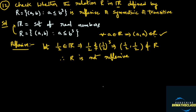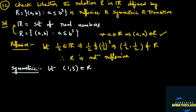Now we need to check whether this relation is symmetric. To check a symmetric relation, we take an ordered pair from the relation. For example, take (1, 3). Is (1, 3) in the relation? Check if 1 is less than or equal to 3 cube — clearly yes, so the ordered pair (1, 3) belongs to R. Now we need to check whether the ordered pair (3, 1) is in the relation. If it is, then we say the relation is symmetric; otherwise, it is not symmetric.